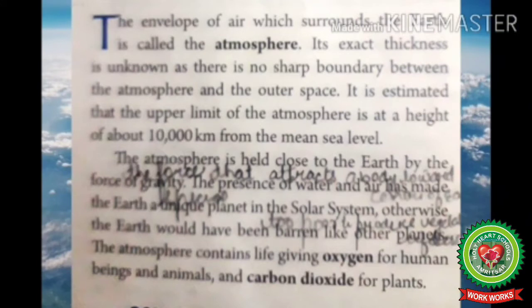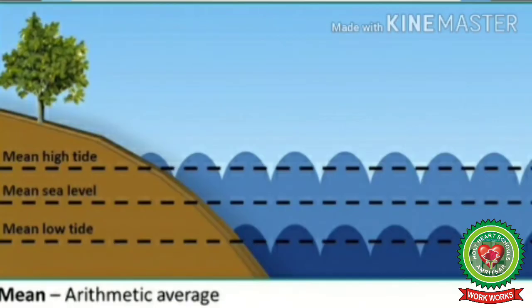The envelope of air which surrounds the earth is called atmosphere. Its exact thickness is unknown as there is no sharp boundary between the atmosphere and the outer space. It is estimated that the upper limit of the atmosphere is at a height of about 10,000 km from the mean sea level. Mean sea level is the average level of the surface of one or more of the earth's bodies of water from which height and elevation are measured.